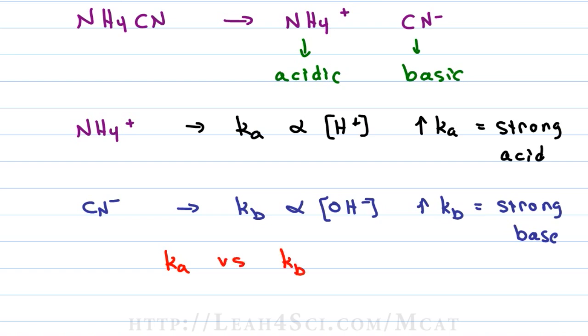If the Ka is greater than the Kb, it tells you that the Ka is more powerful at directing this solution and therefore it's going to be acidic but if the Kb is greater than the Ka, that means the base is stronger, the base wins out and it'll be a basic solution.